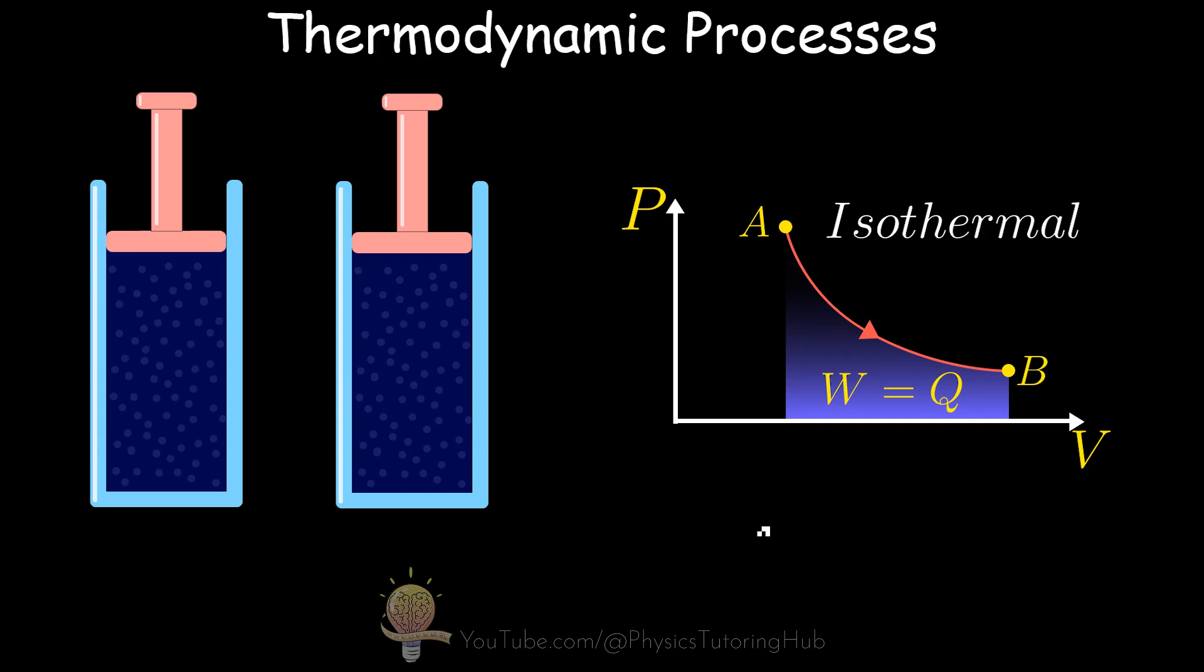Our next thermodynamic process is an isothermal process. An isothermal process occurs when the temperature in the system remains constant between state changes. Now the volume and pressure can change, but the temperature remains constant.